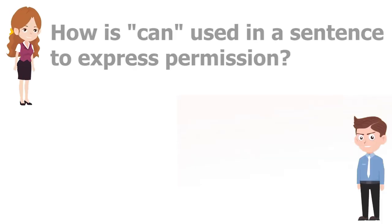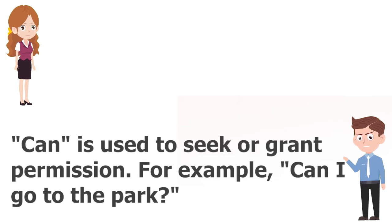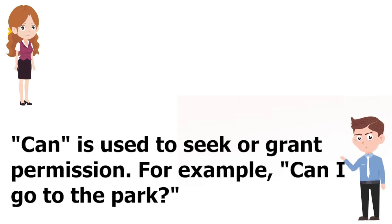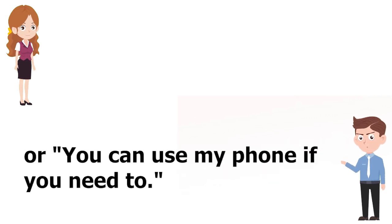How is "can" used in a sentence to express permission? "Can" is used to seek or grant permission. For example, "Can I go to the park?" or "You can use my phone if you need to."